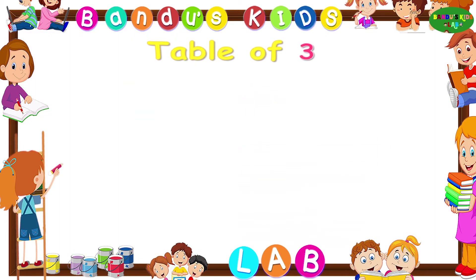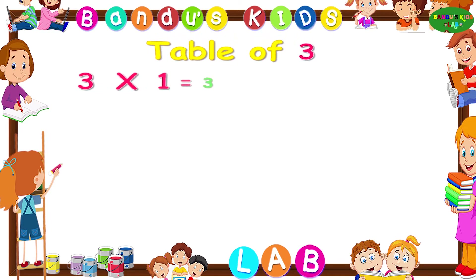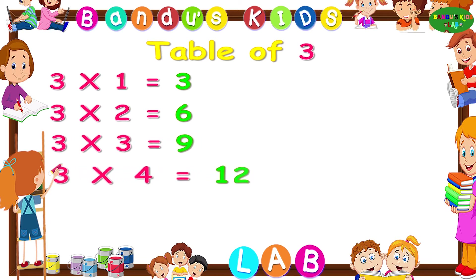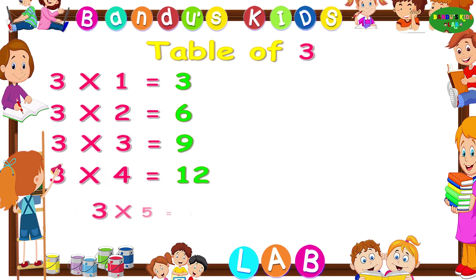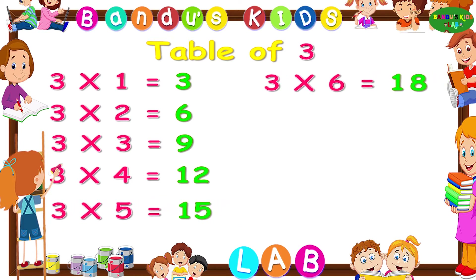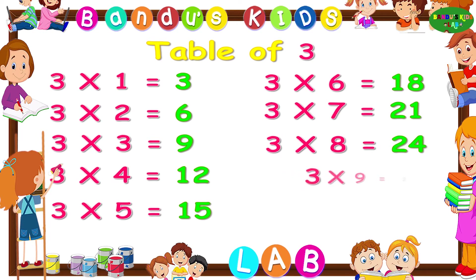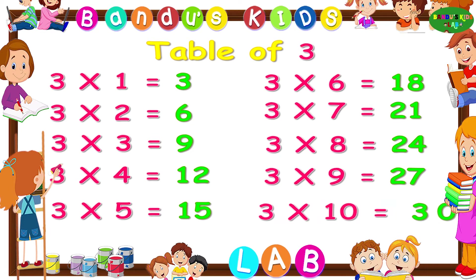Now let's revise the table of three one more time. Three ones are three. Three twos are six. Three threes are nine. Three fours are twelve. Three fives are fifteen. Three sixes are eighteen. Three sevens are twenty-one. Three eights are twenty-four. Three nines are twenty-seven. Three tens are thirty.